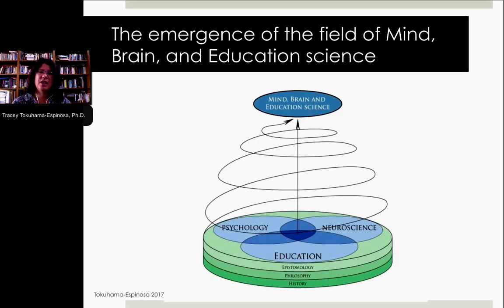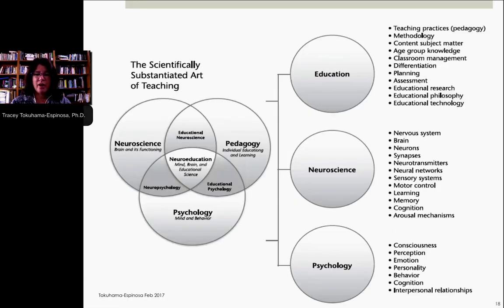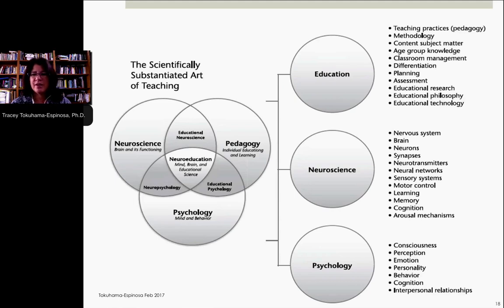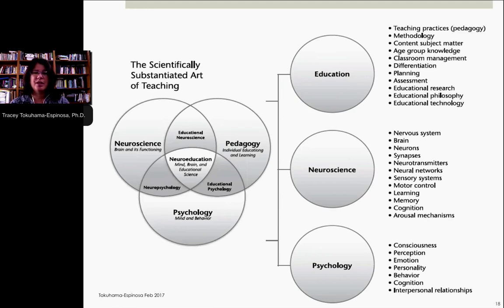The emergence of the field of mind, brain, and education science, which really began around the turn of the century — around 2001 — is a new idea but something that's really catching on. It should be separated out from educational neuroscience and the learning sciences because it has this element of pedagogy, of teaching, of didactics, of understanding how you actually operationalize the information. It also has this huge element of understanding the basics of the human brain — what are synapses, how do neurotransmitters influence learning, what is the key role of memory and attention in learning — but also understanding general psychology: how emotions or affect influence cognitive abilities, the role of consciousness in learning, and how interpersonal relationships influence learning dynamics within the classroom.